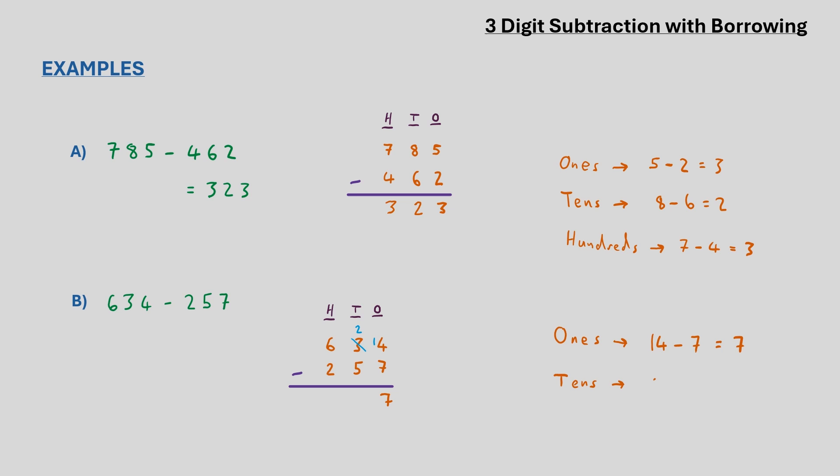Now looking at the tens column we currently have 2 minus 5, so again some borrowing is going to be needed. Borrowing a digit from the hundreds column turns the 6 there into a 5 and turns the 2 in the tens column into a 12. Now in the tens 12 minus 5 gives us 7.